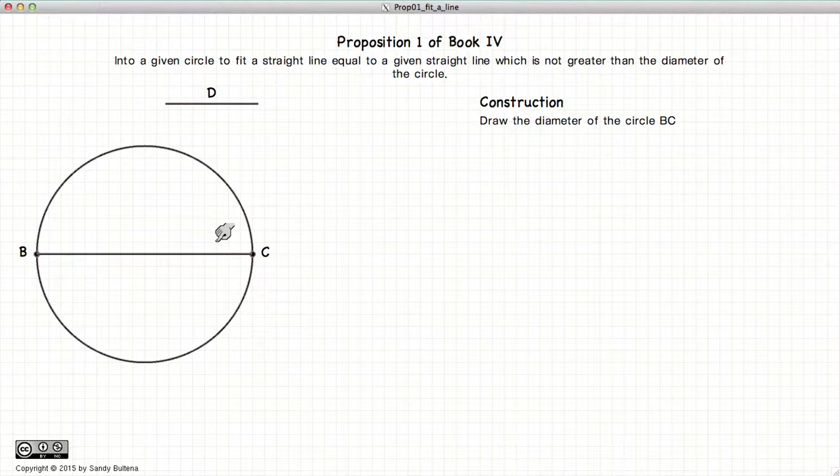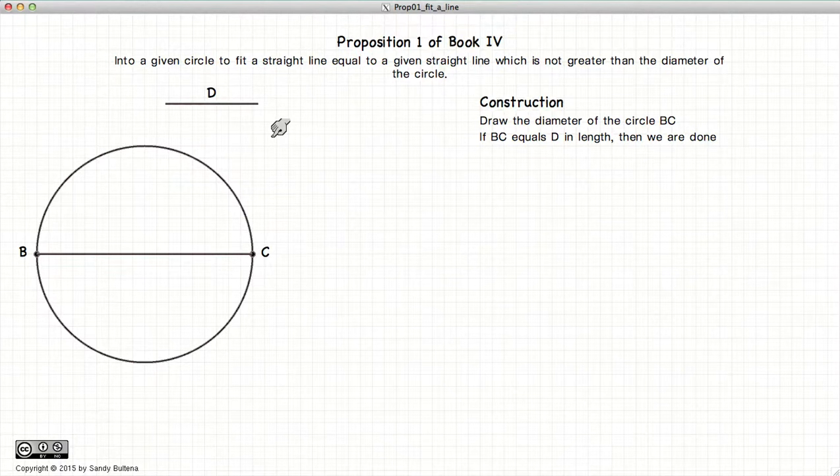Now if BC is equal to the length D, then everything is done and we're finished. But let's assume that it's not.